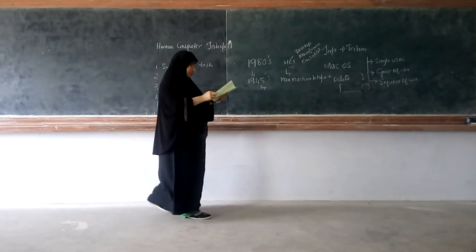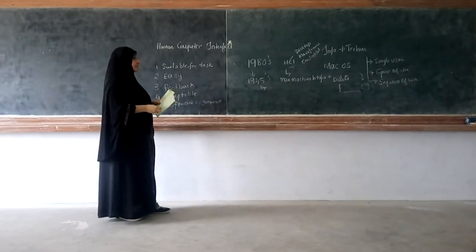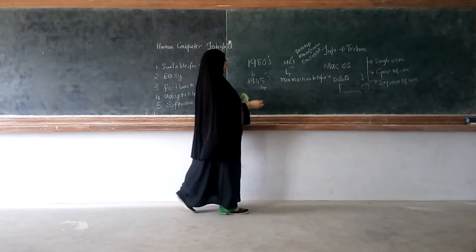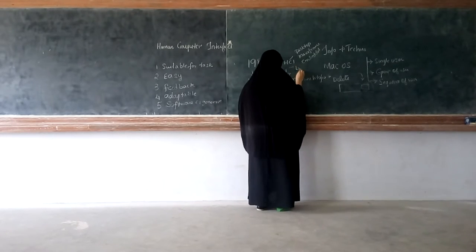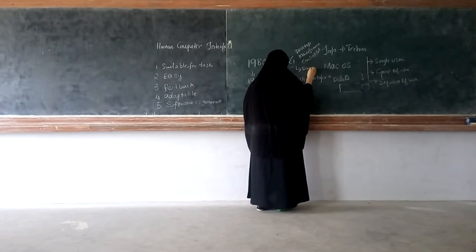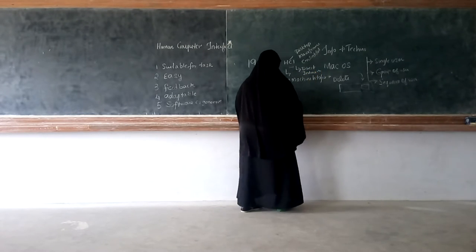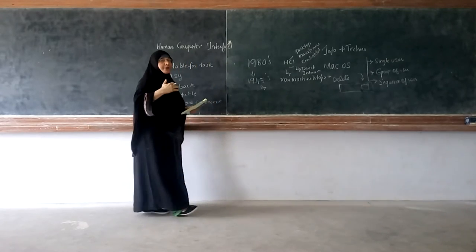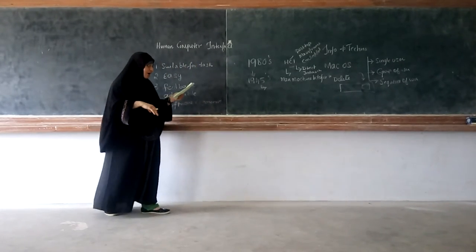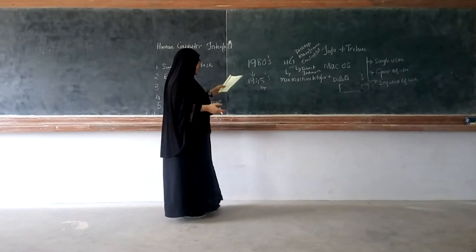And this interaction, it can be a direct interaction, or it can also be an indirect interaction. So what do you mean by direct interaction? That is, a dialogue and feedback between the system and the user, and for the performance.